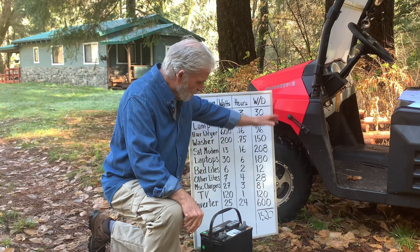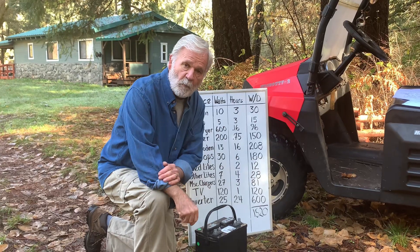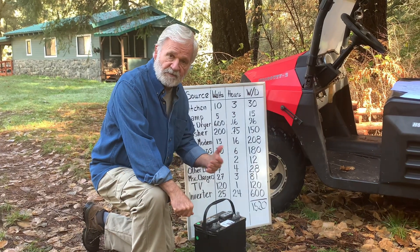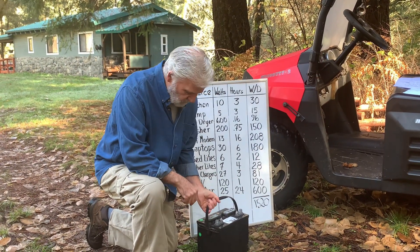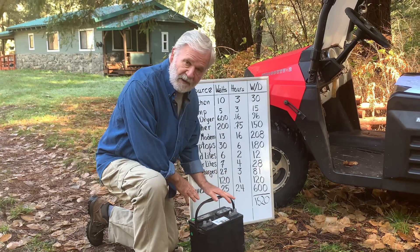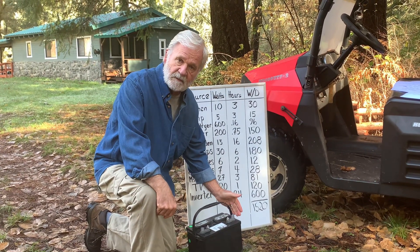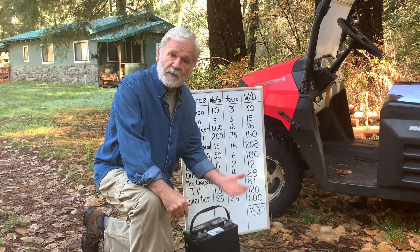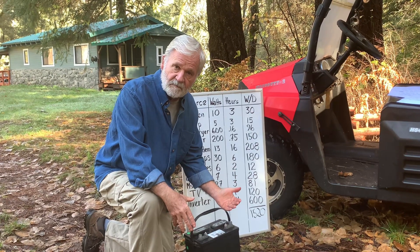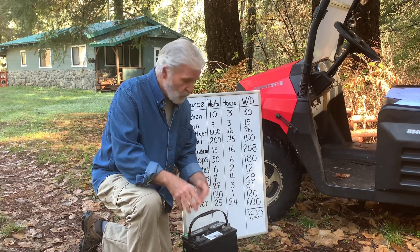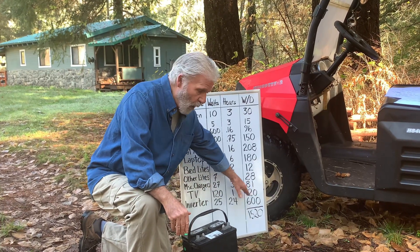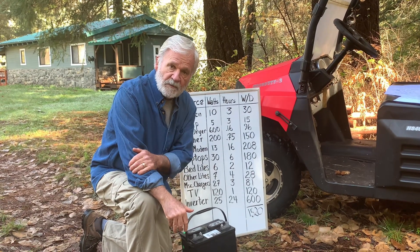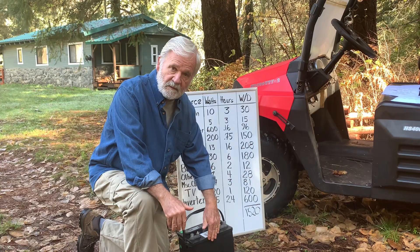We know that our house requires 1520 watt-hours of electricity a day — Karen showed us how to calculate this in our last episode. We also know from an earlier episode that batteries are measured in amps, not in watts, and we also know they need to be recharged after they've been discharged about 50%. Now we have a problem: we're talking about watts here and amps here.